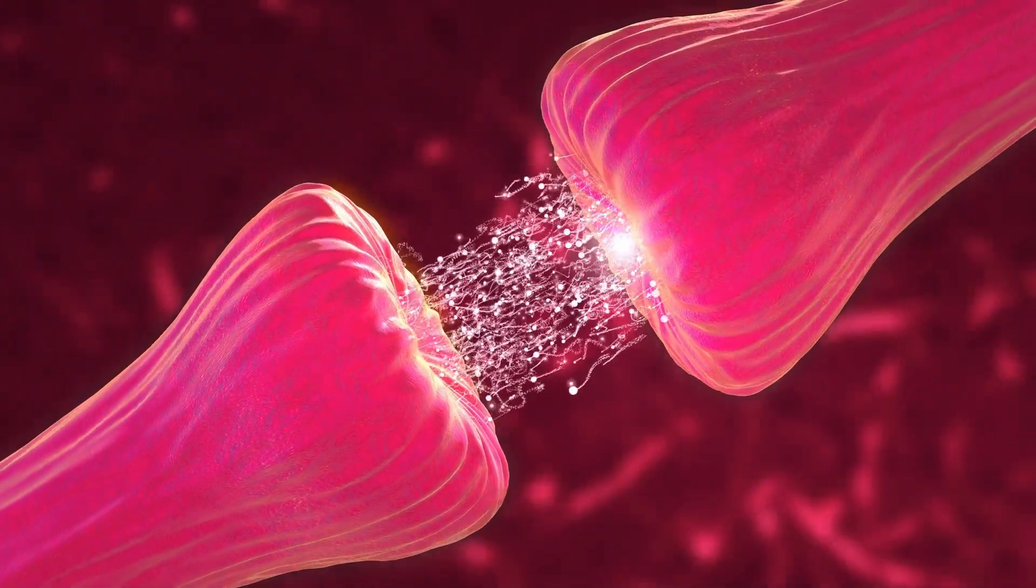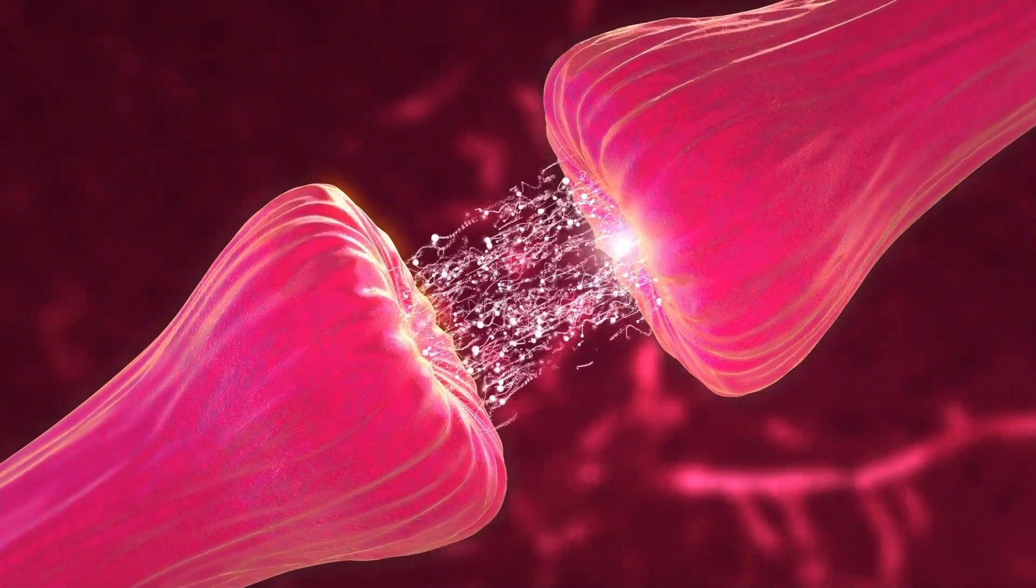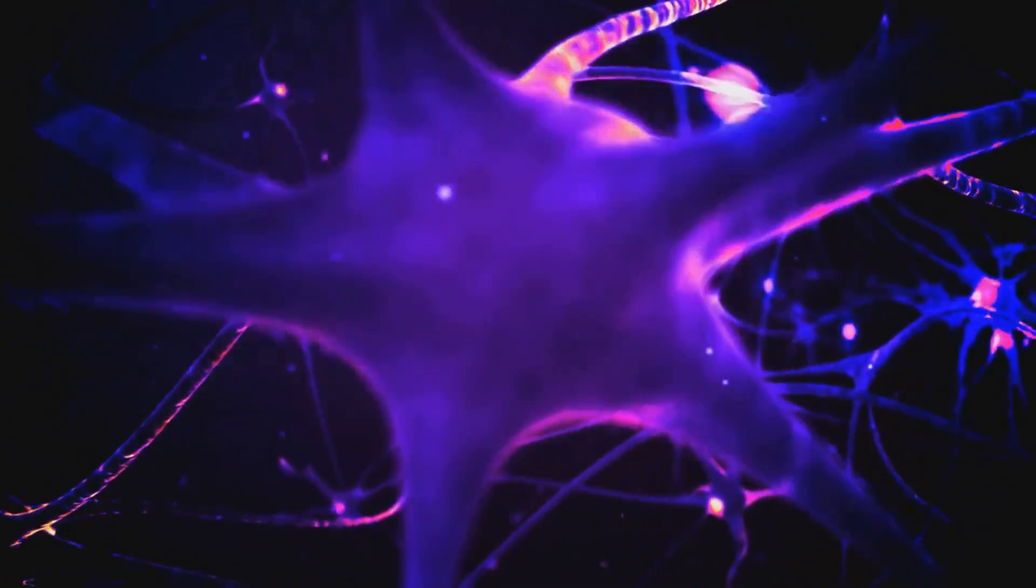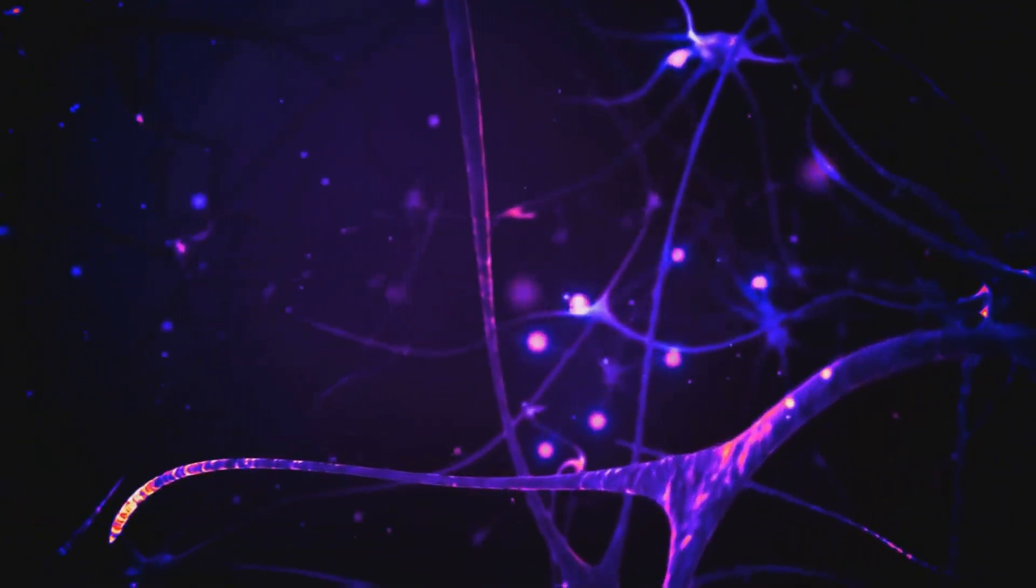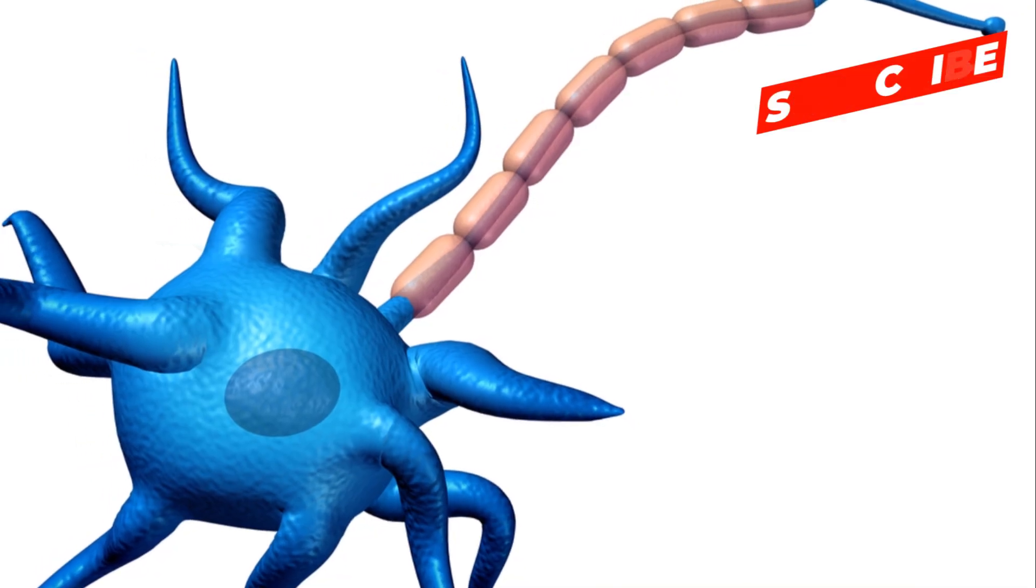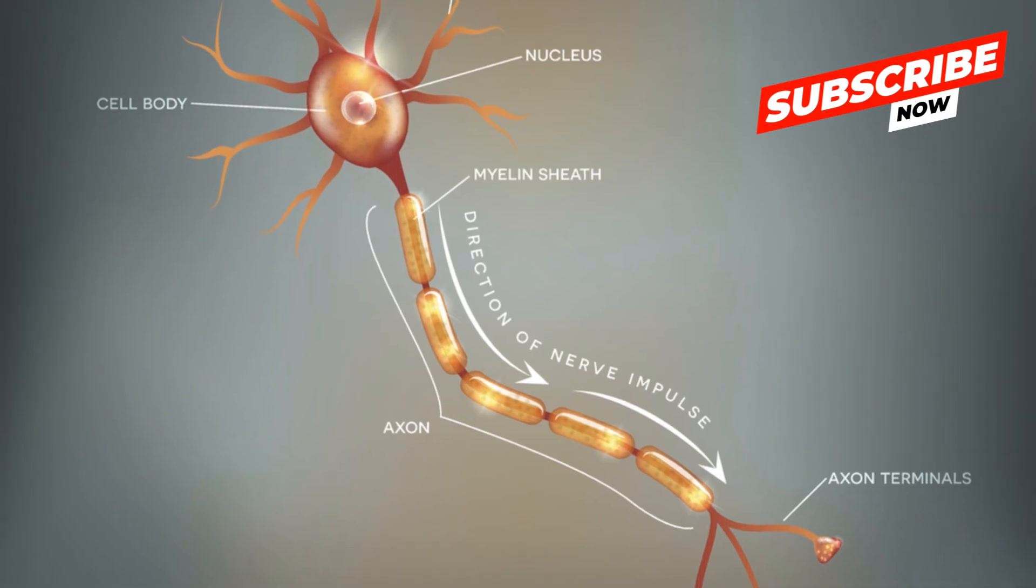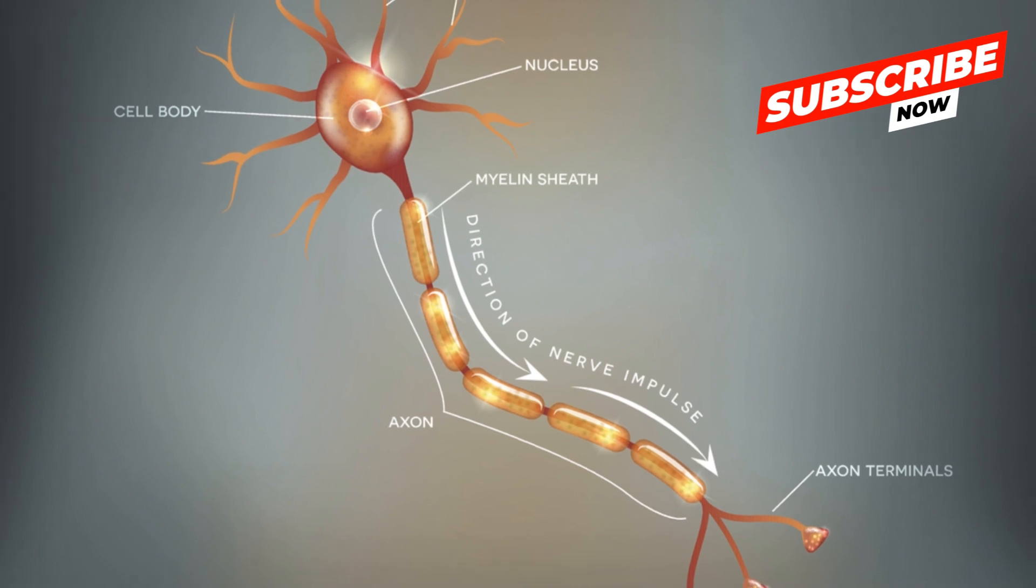Imagine them as incredibly intricate trees, with roots and branches extending out. The roots, or dendrites, receive signals from other neurons, while the branches, or axons, send signals out. The cell body, or soma, is the powerhouse, keeping the neuron alive and functioning.